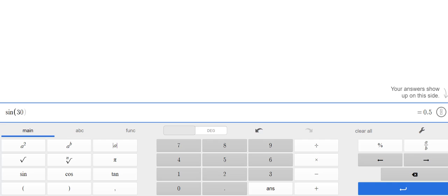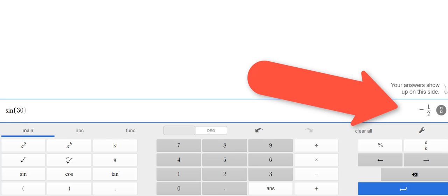Then over on the right side of the screen, you'll see your answer show up there. Again, if you want that to be in a fraction form, you just simply hit that little button right there on the right.